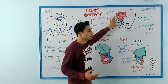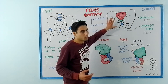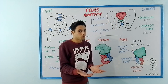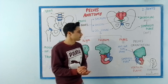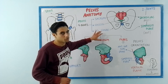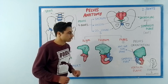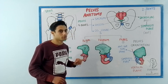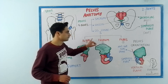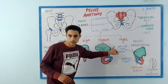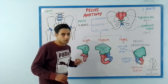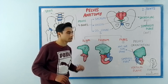Beneath the sacrum we have the coccyx, and the os coxae, also known as the hip bone, on both sides. These four bones together form the pelvis. Now let's take out one hip bone and study its features. The hip bone is further composed of three major bones: ilium, ischium, and the pubis.